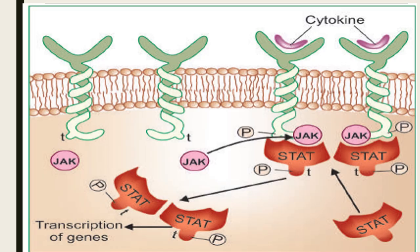The external domain of the receptor receives the agonist, which activates the internal domain. This binds with a JAK molecule floating in the cytoplasm, which phosphorylates the tyrosine residue of the internal domain. This then binds to STAT — the signal transducer and activator of transcription. The phosphorylated STAT dimerizes, dissociates from the internal domain, and moves to the nucleus to transcribe the gene.